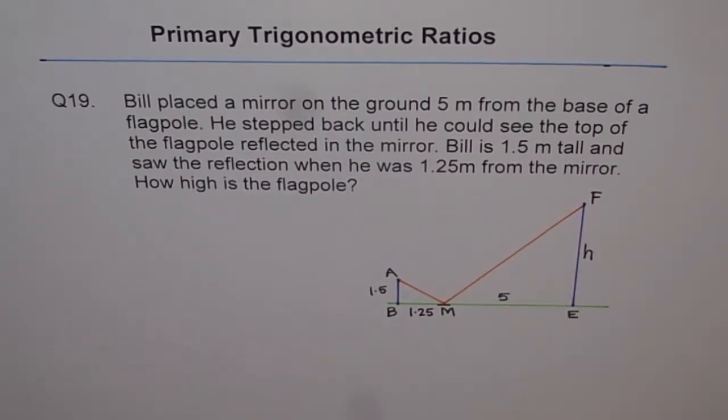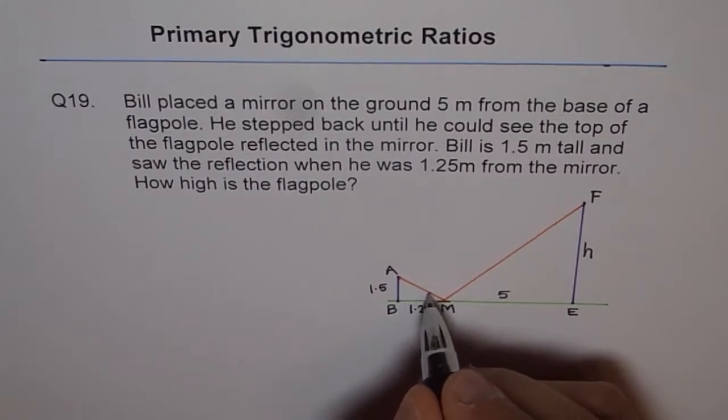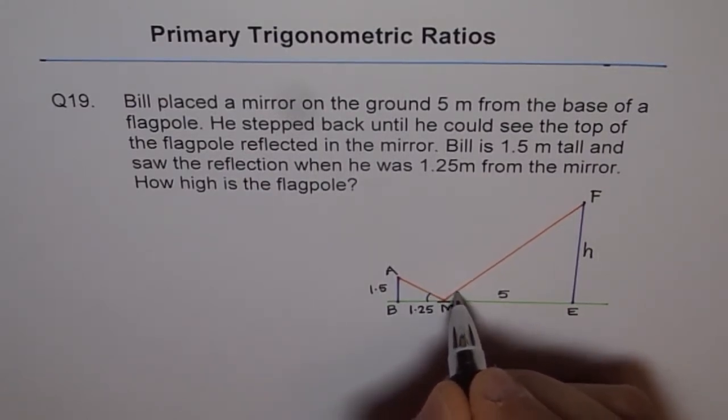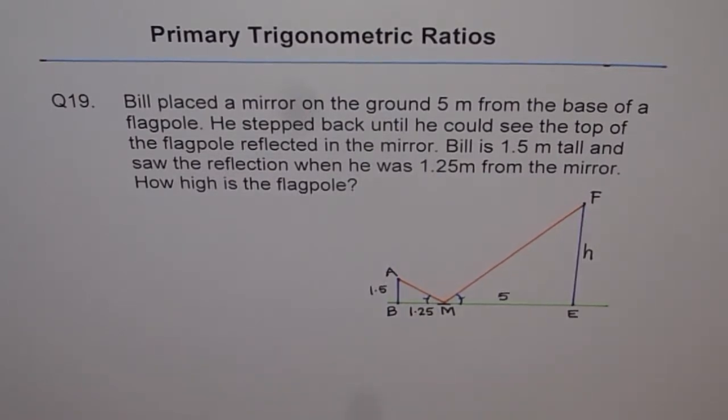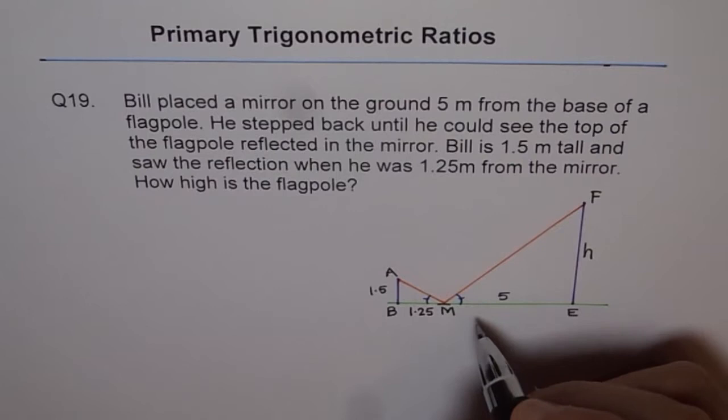To solve this question, let's think about it. We're given this small triangle and we know this is a reflection, so these two angles will be equal. That's the property of light - the angle of incidence equals the angle of reflection.